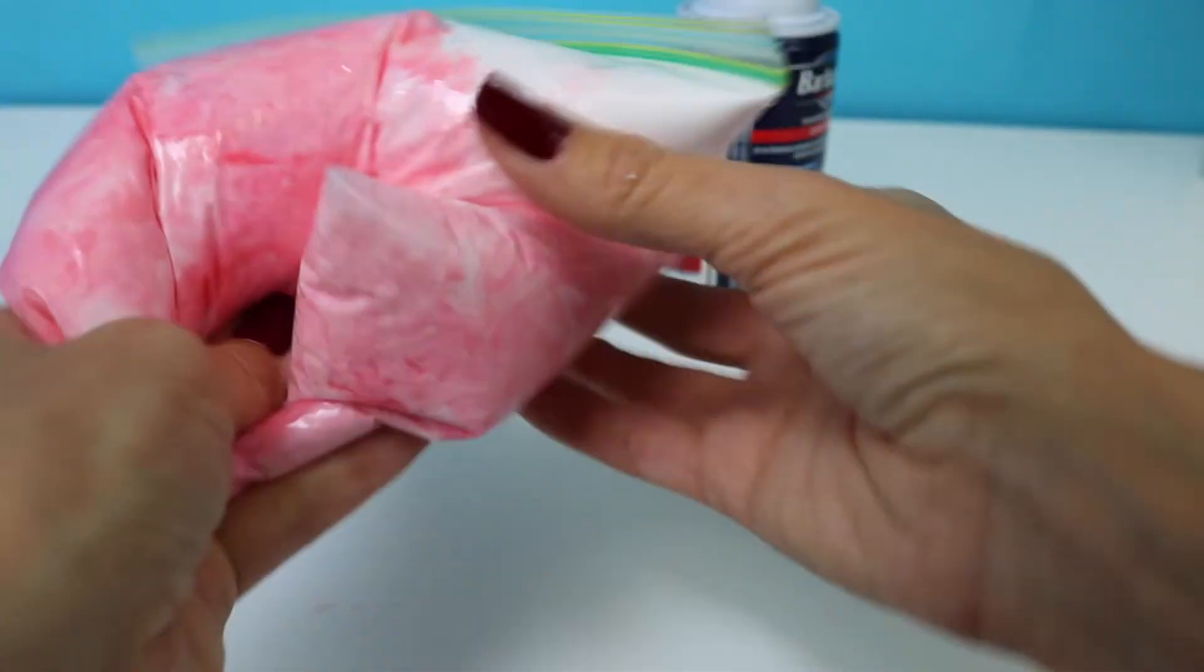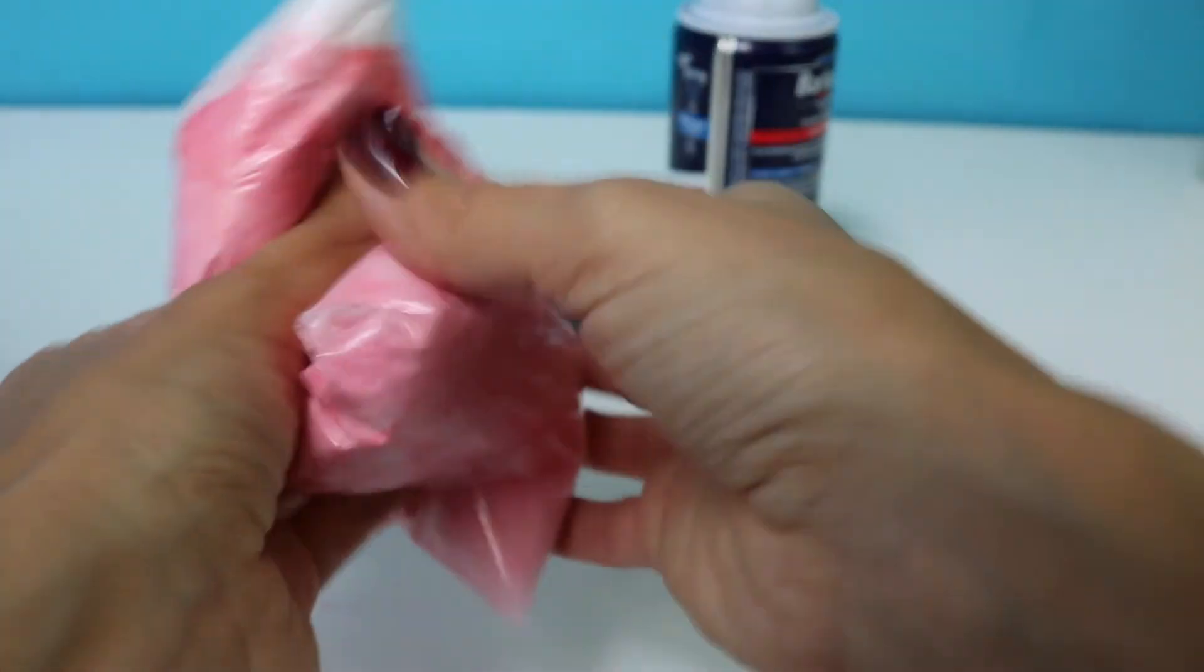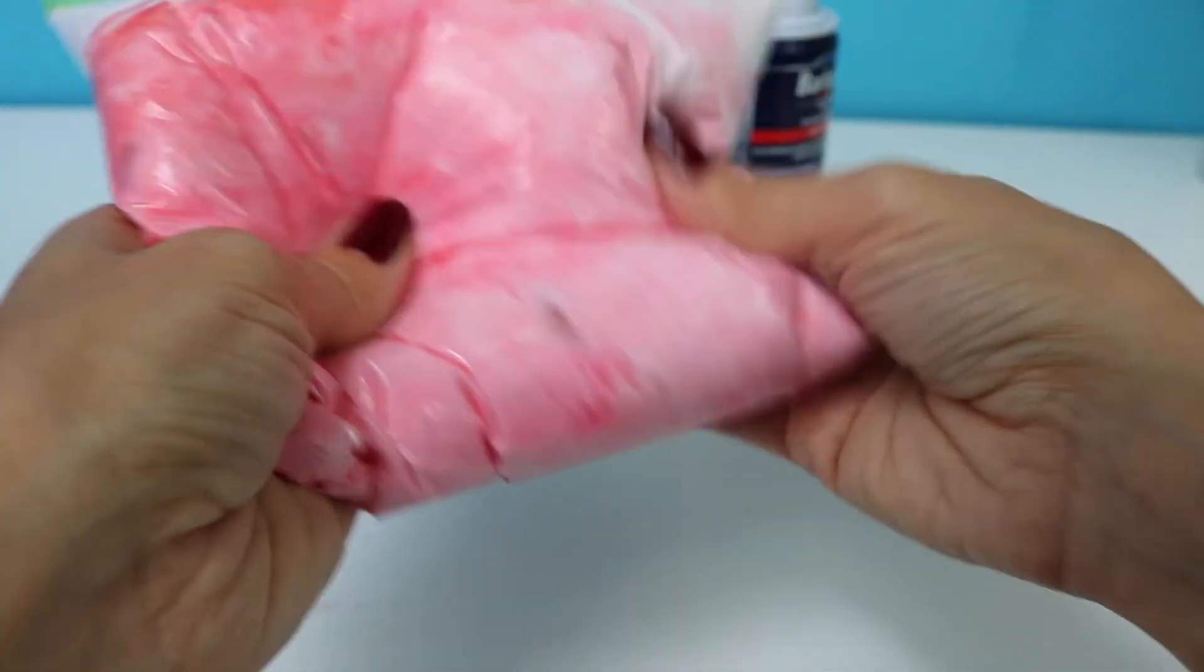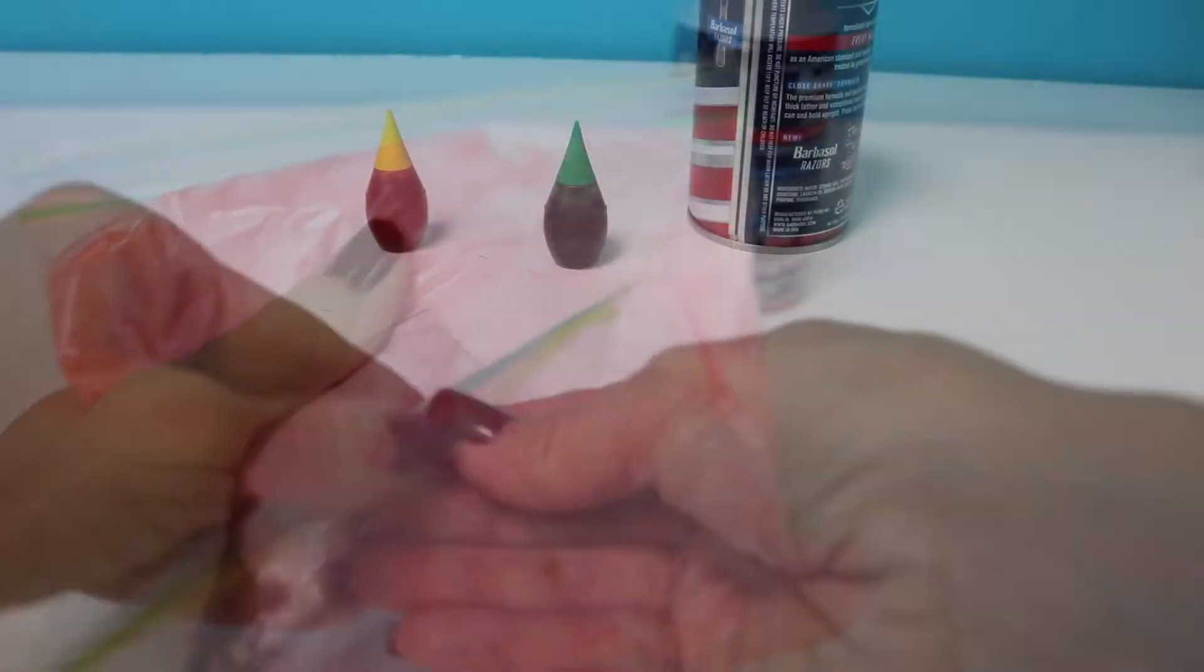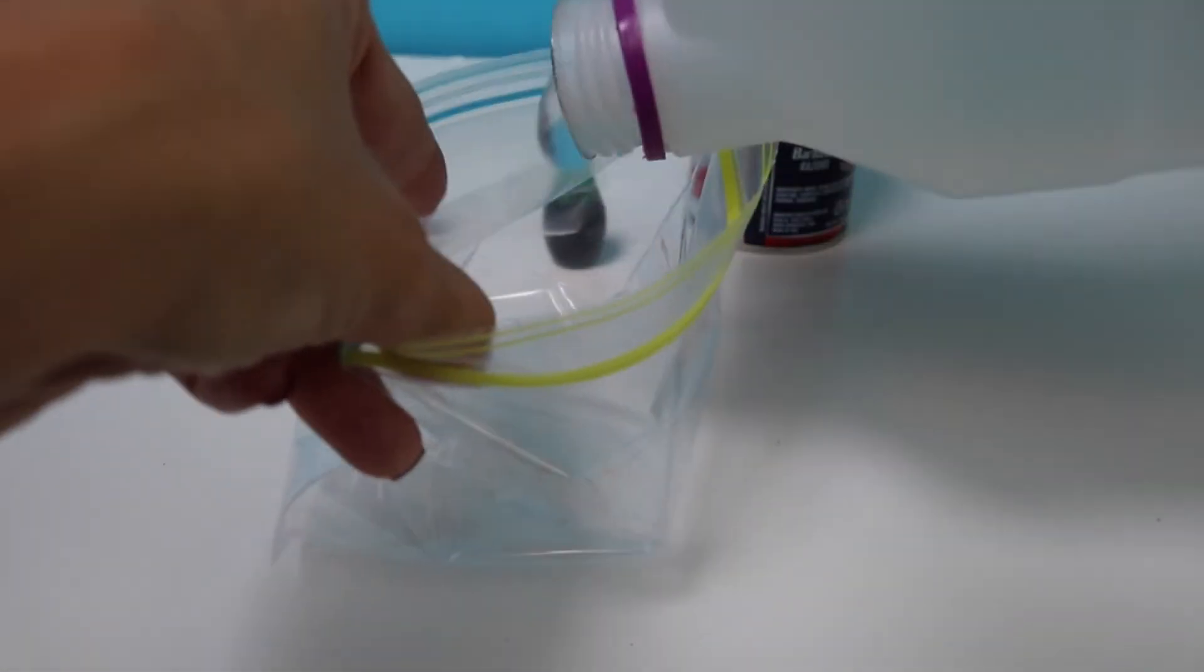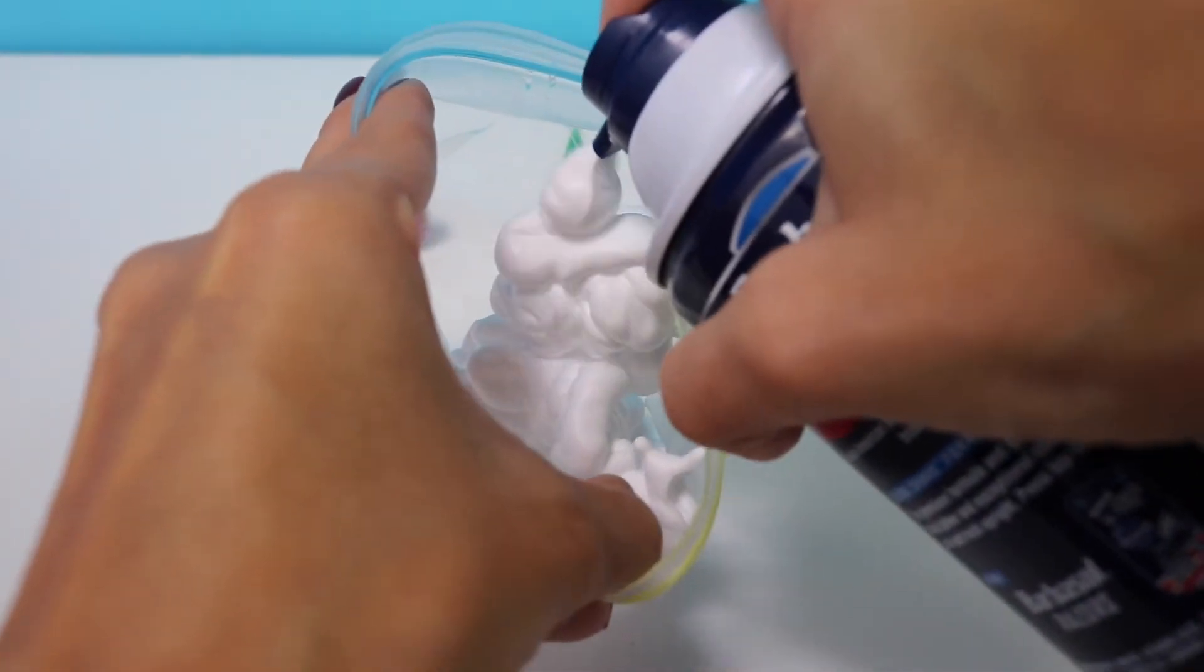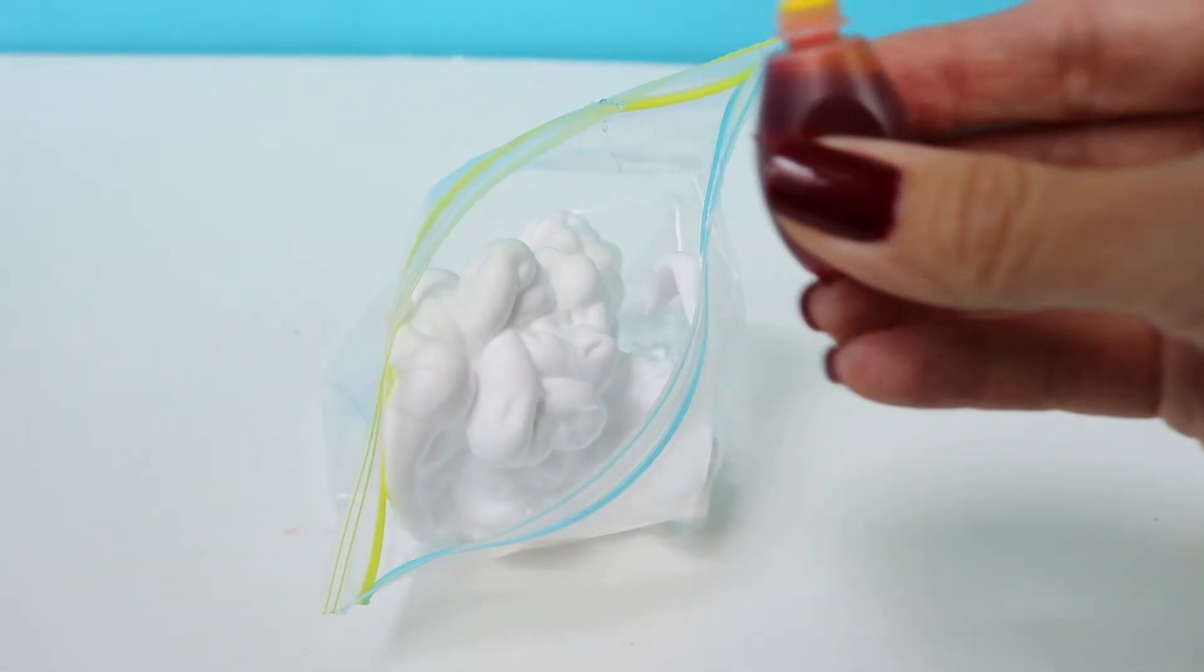And also don't forget to smash that thumbs up button if you like this video. We like to do videos like this with you guys. I like that pink color. Let's speed it up a little bit to make these other colors because I have some fun things that we're going to do with this puffy paint once Dot Dot's done making it.